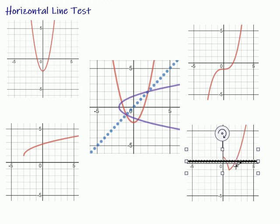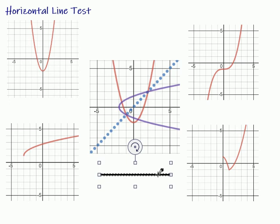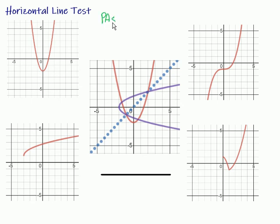I apologize for my yawning — it's too late at night doing these things. But I want to get this information out so I can help you learn this stuff, because this is good stuff. So, the horizontal line test is kind of the cousin of the vertical line test. If a horizontal line touches our graph more than once, it fails the horizontal line test. If it passes — meaning it only touches once — then the inverse is a function.